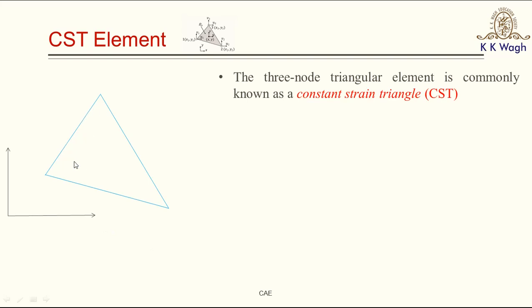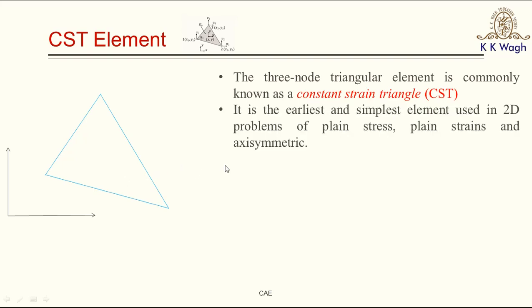The three-noded triangular element is commonly called as a Constant Strain Triangle, that is CST. The shape of this element is triangular, we have three nodes, and the strain is constant within the element, so that's why it is called as a Constant Strain Triangle. It is also called as a linear triangle. This is the very earliest and simplest element used for solving 2D problems like plane stress, plane strain, and axisymmetric type. The node numbers for this element are given in anticlockwise direction.